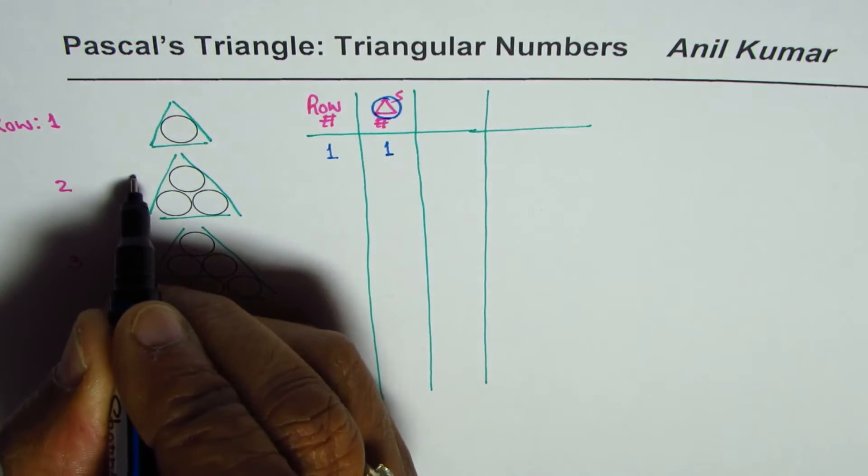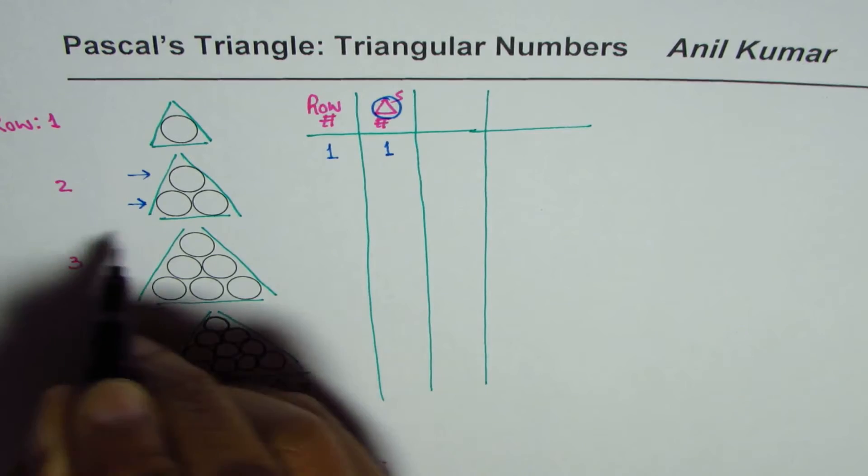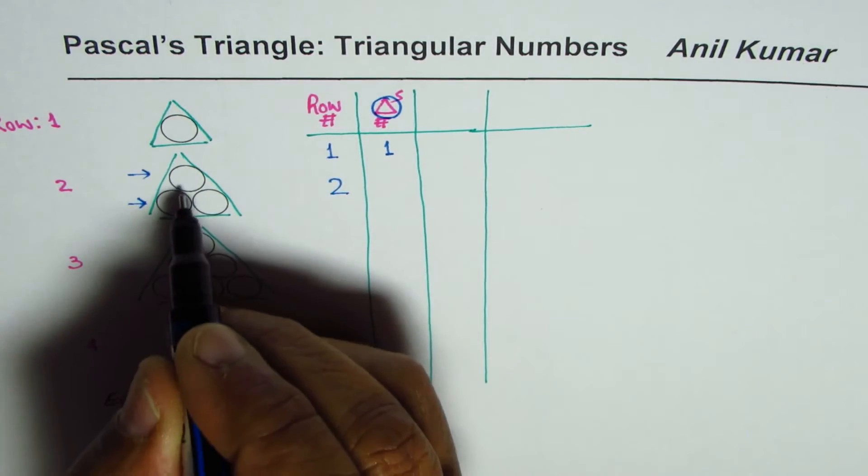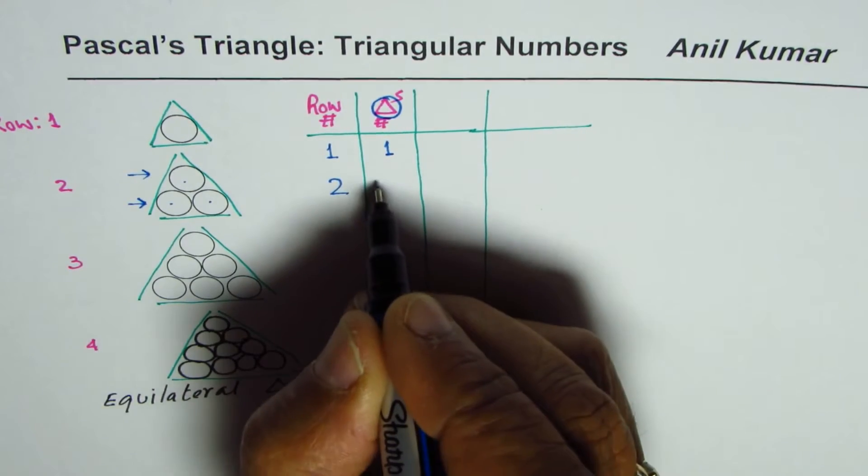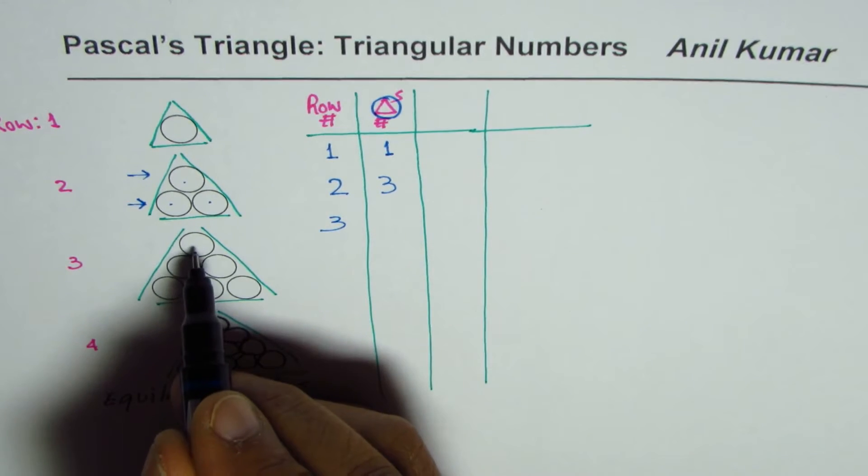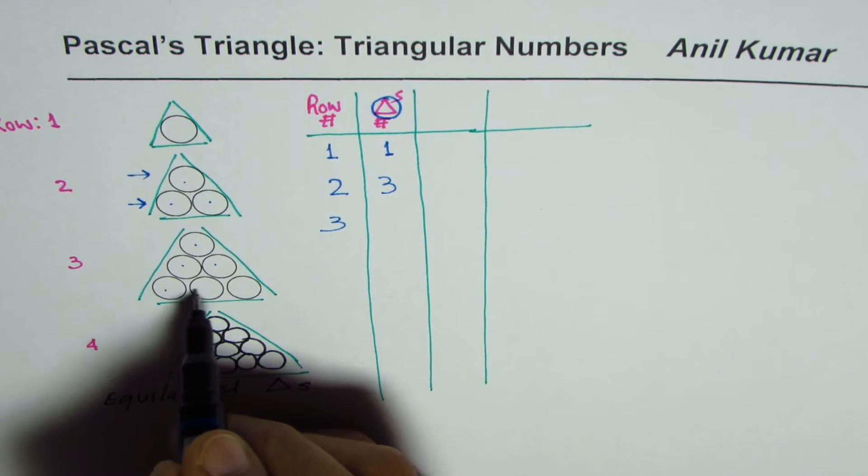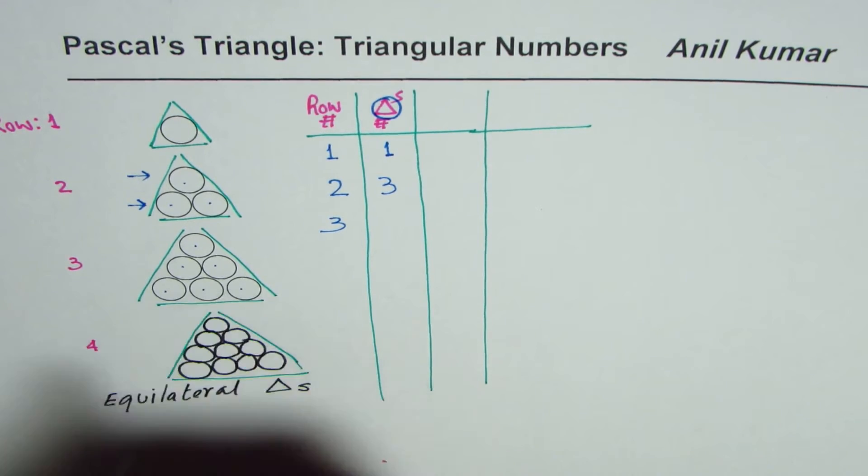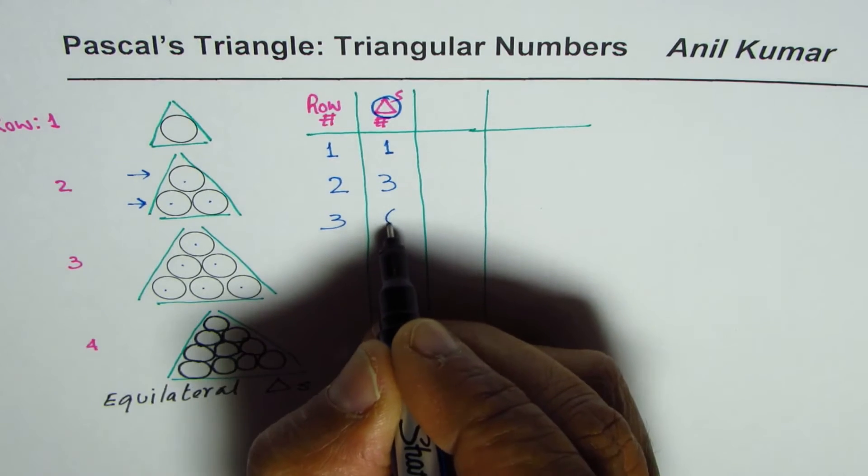If we have two rows, we have three circles. These are the three circles we are talking about. Third row has three more. So you add three to it, you get six.